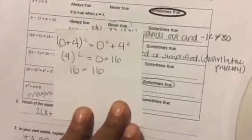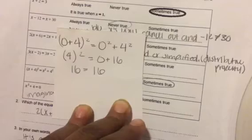Plugging in zeros, 0 plus 4 squared equals 0 squared plus 4 squared. Simplifying, 4 squared equals 0 plus 16. 16 is equal to 16.